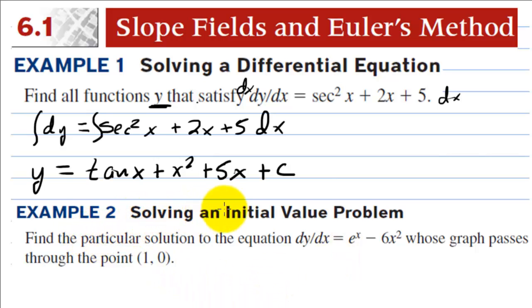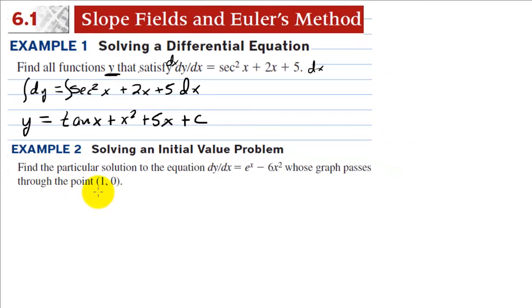In example 2, we're solving an initial value problem, which means they're going to give us one point so that we can actually find the constant. So we have dy equals e to the x minus 6x squared dx. We're going to integrate both sides. So we have y equals e to the x minus 2x to the third, and here's where we have plus C.